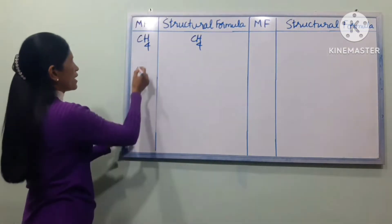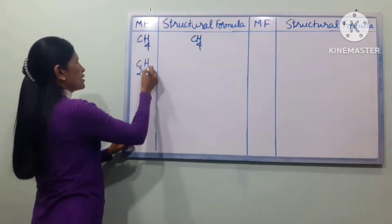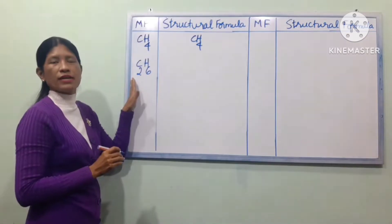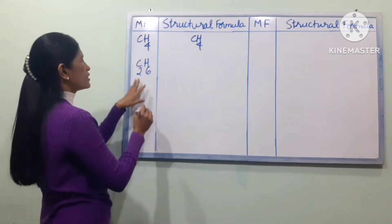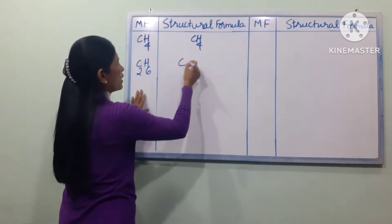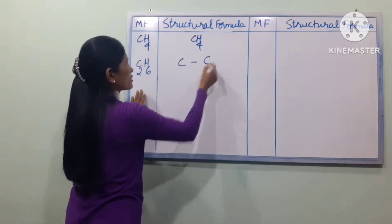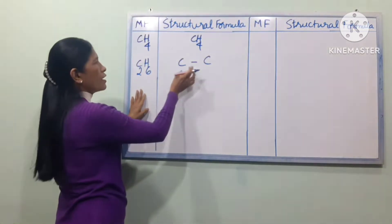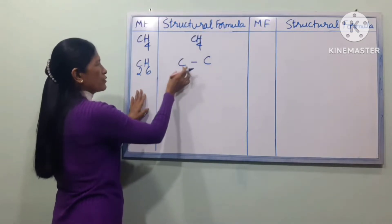If you are interested in CnH2, CnH2 is the structure of the hydrogenated formula. CnH2 will be for n equals 3, and CnH2 will be for n equals 4. Next, the threshold formula is hydrogen.